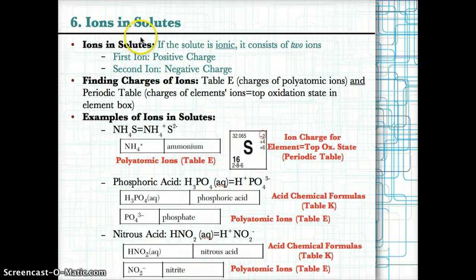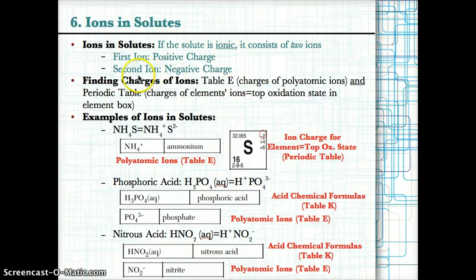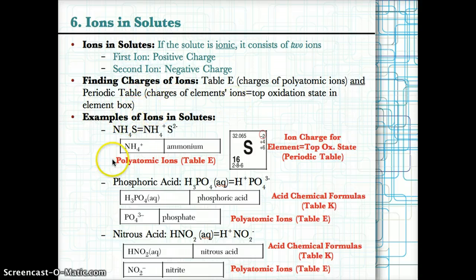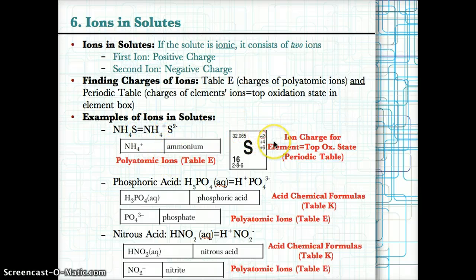Ions and solutes: if the solute is ionic, it has two ions — the first with a positive charge and the second with a negative charge. Use table E to find the charges of polyatomic ions, and the periodic table for the top oxidation states of elements. For example, in NH₄₂S: NH₄ has a charge of +1 according to table E (ammonium), and S when it forms an ion has a charge of −2 based on its top oxidation state from the periodic table.